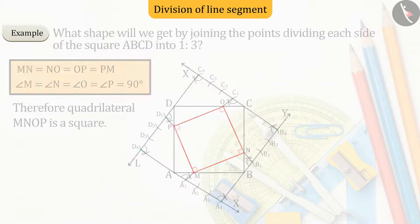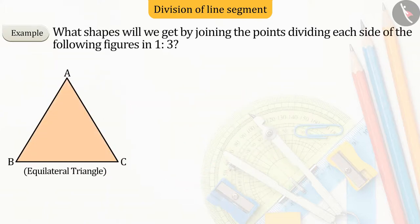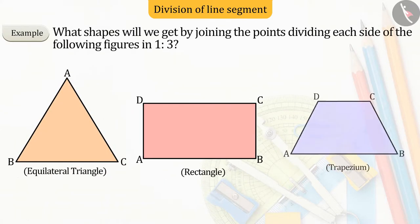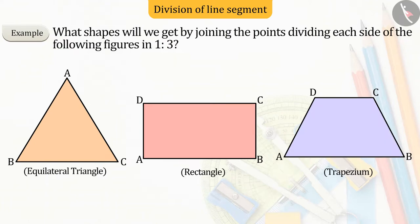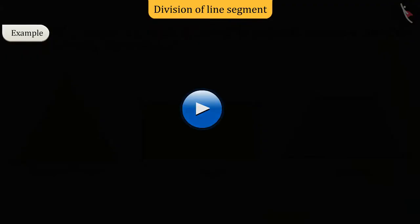Now, can you tell what shapes we get when we connect the points dividing the sides in ratio 1:3 for an equilateral triangle, rectangle, and trapezium? Pause the video and match your answer later.